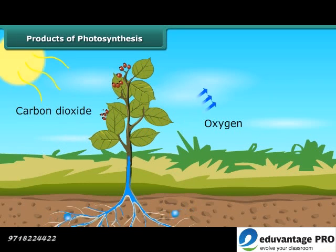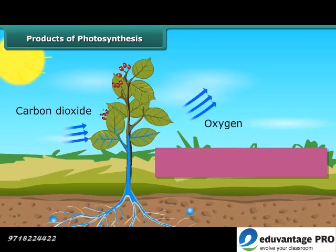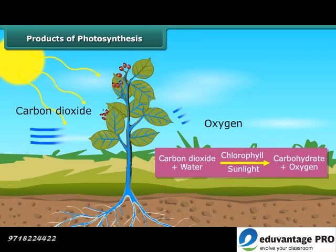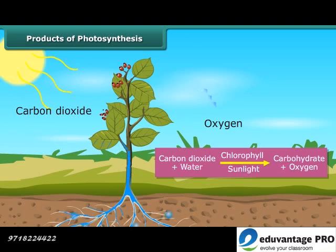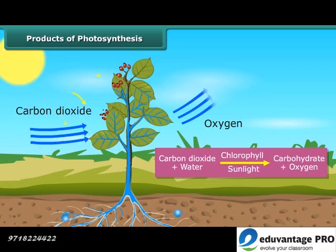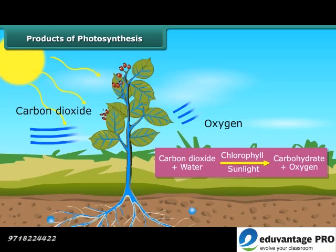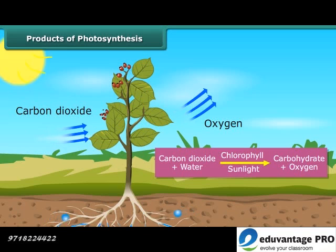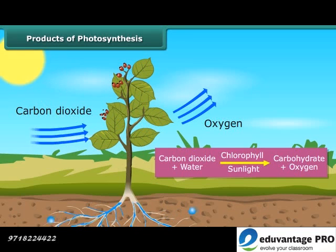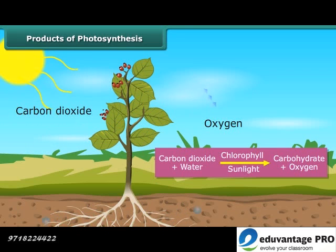Therefore, the process of photosynthesis can be represented as: carbon dioxide plus water, in the presence of chlorophyll and sunlight, gives carbohydrate plus oxygen. In the presence of sunlight, carbon dioxide and water give carbohydrate, and oxygen is released in this process.